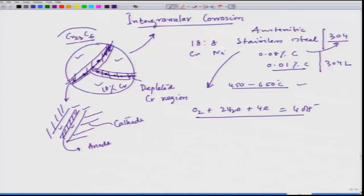How do you stop intergranular corrosion? The culprit is the chromium carbide formation, so somehow we have to stop it. One route is to reduce carbon content. If we do not have carbon for the precipitation of chromium carbide, it would not precipitate, and chromium would be distributed homogeneously over the entire surface. There will be no formation of a preferential anode with a large-area cathode, and so we can avoid intergranular corrosion.